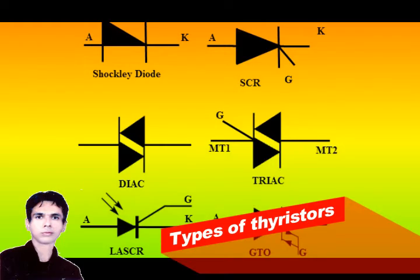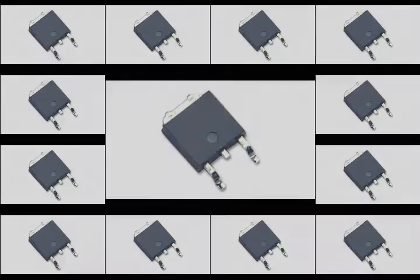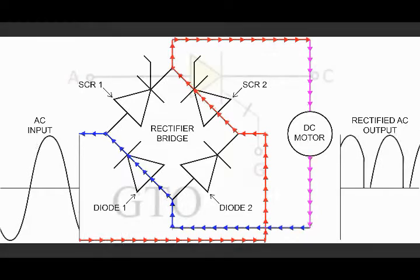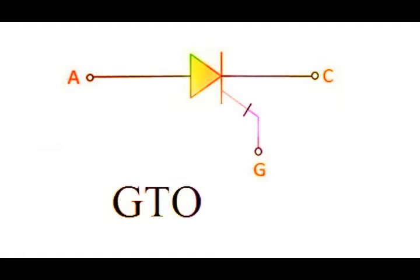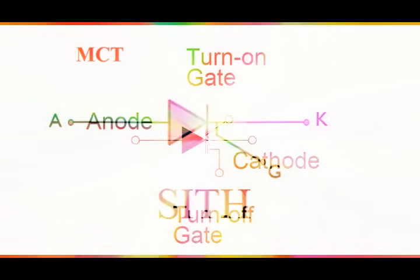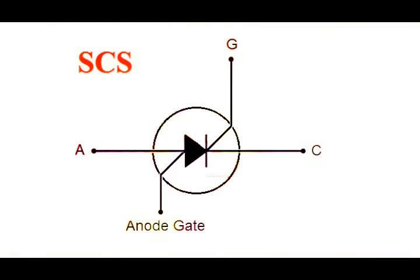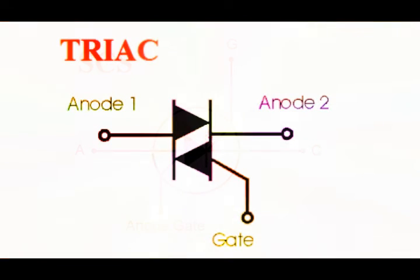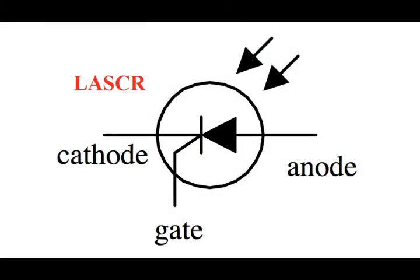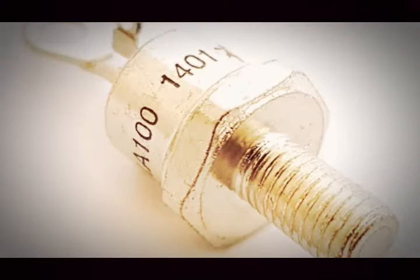There are other semiconductor components that fall under the thyristor category and can conduct in both directions. These parts can be turned off with a gate signal. Gate Turn-Off thyristor or GTO, Static Induction Thyristor or SITH, MOS Controlled Thyristor or MCT, Silicon Controlled Switch or SCS, Triode Thyristor or TRIAC, and Light Activated Thyristor or LASCR are different types of thyristor available in different voltages and currents for very high powers.